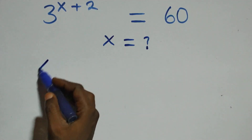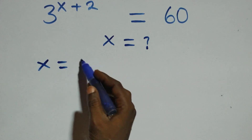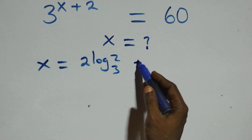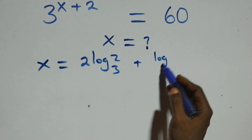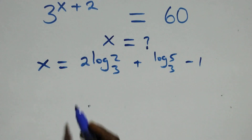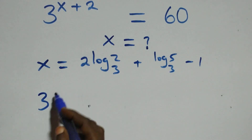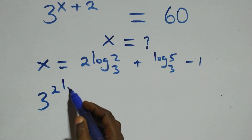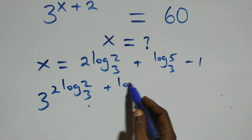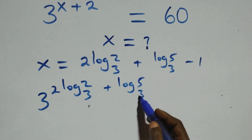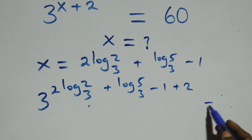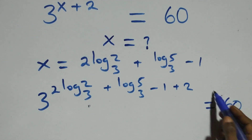With x equals two log two base three plus log five base three minus one, what we have becomes three raised to the power of (two log two base three plus log five base three minus one), plus two. Is it equal to sixty?